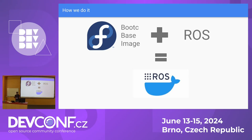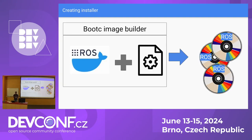We have a container that has ROS in it. We can boot it and run it — it will be like just using 'podman run' to use that image. But if you want to distribute it — for cases where we need scalability — we have another tool called the Bootc image builder. When you use that ROS container with your configs done and run it through the Bootc image builder, you can create multiple deployable images having ROS. I will show you how.